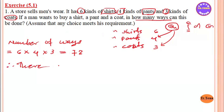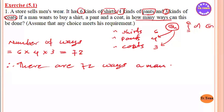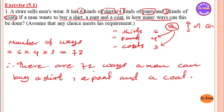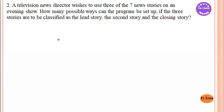There are 72 ways a man can buy. A man can buy a shirt, a pen, and a coat. There are 72 ways a man can buy.